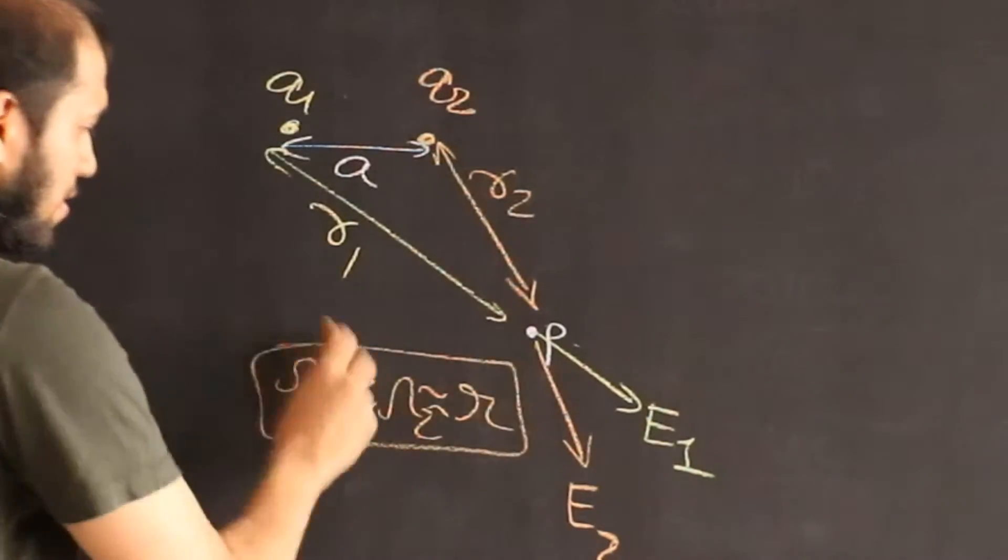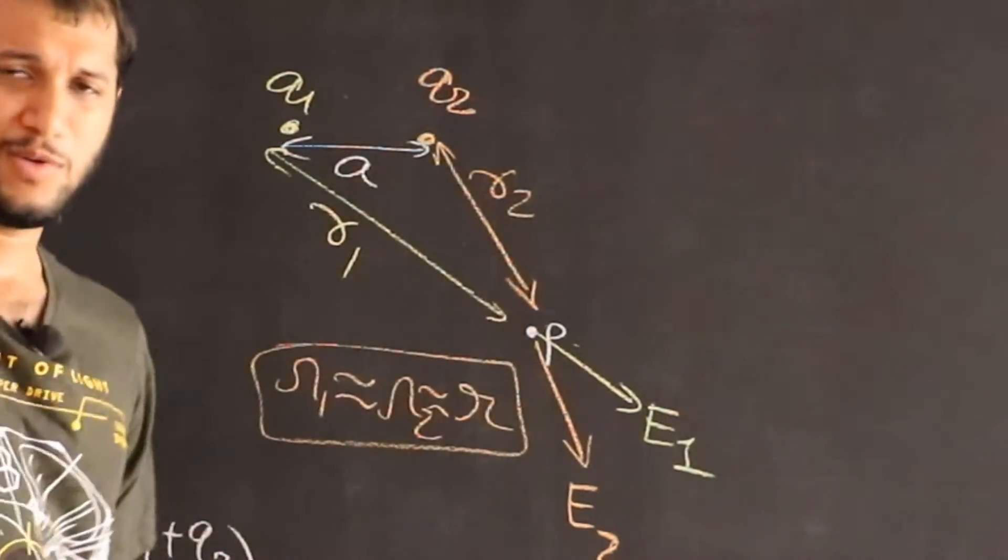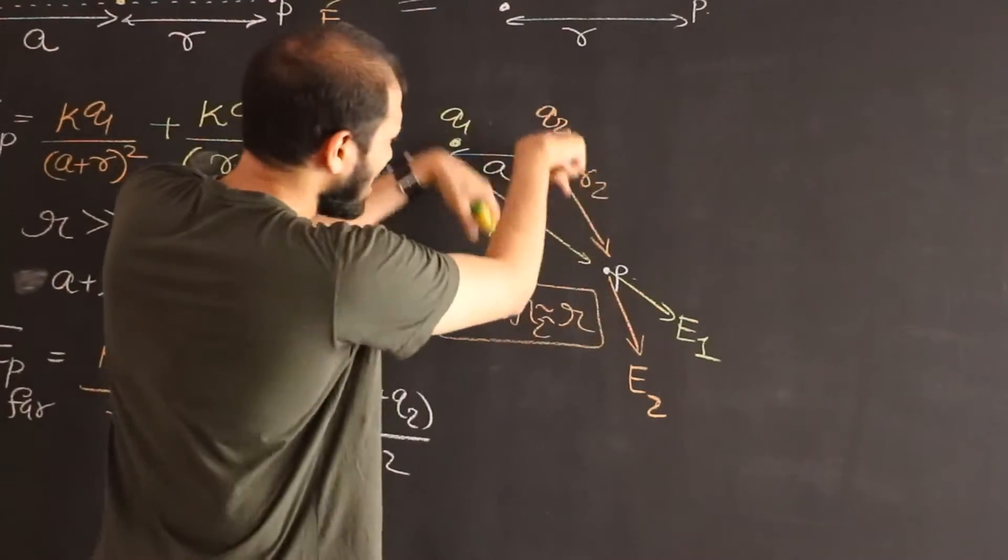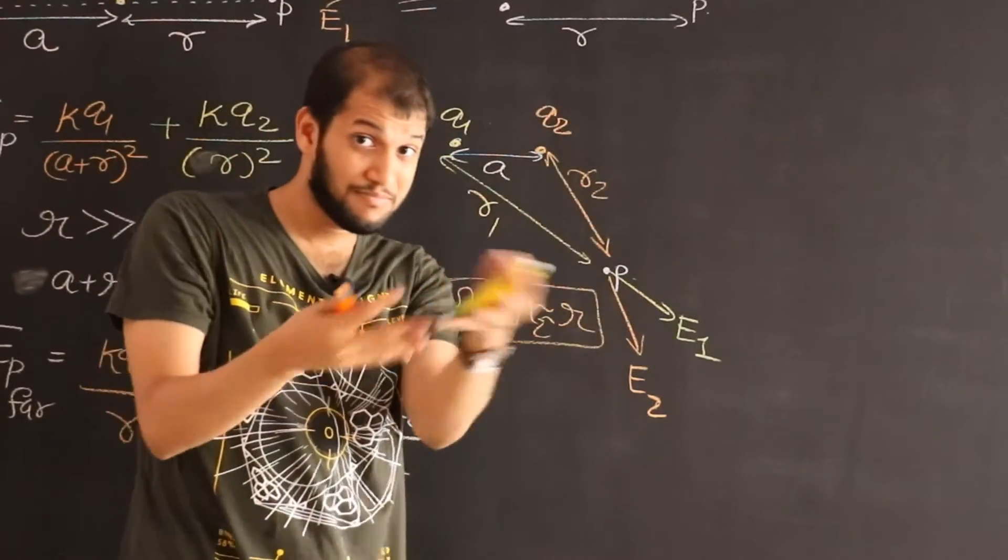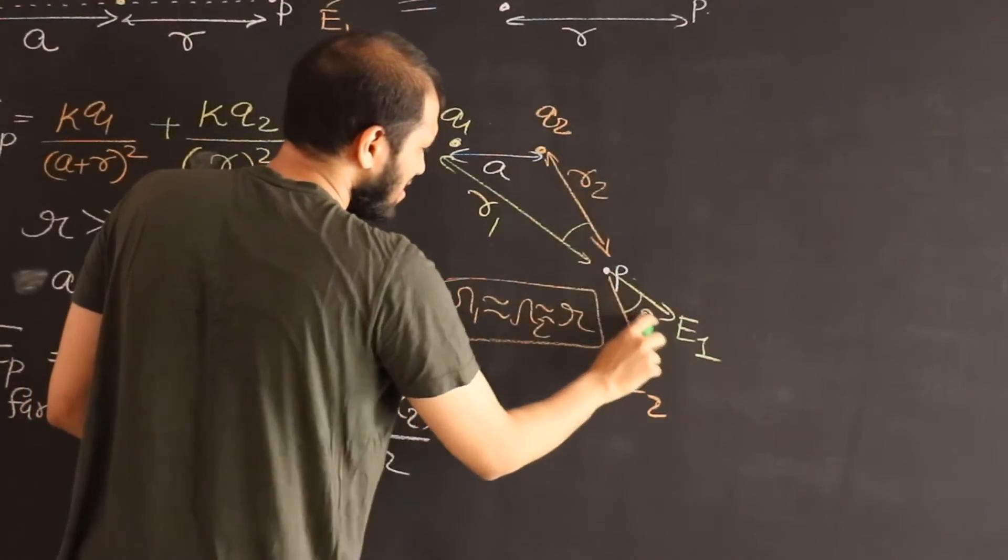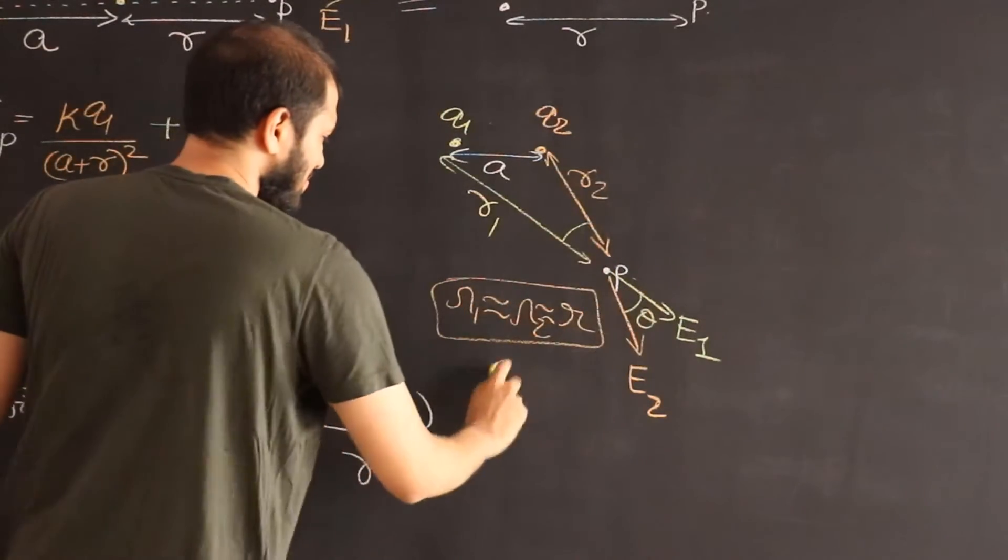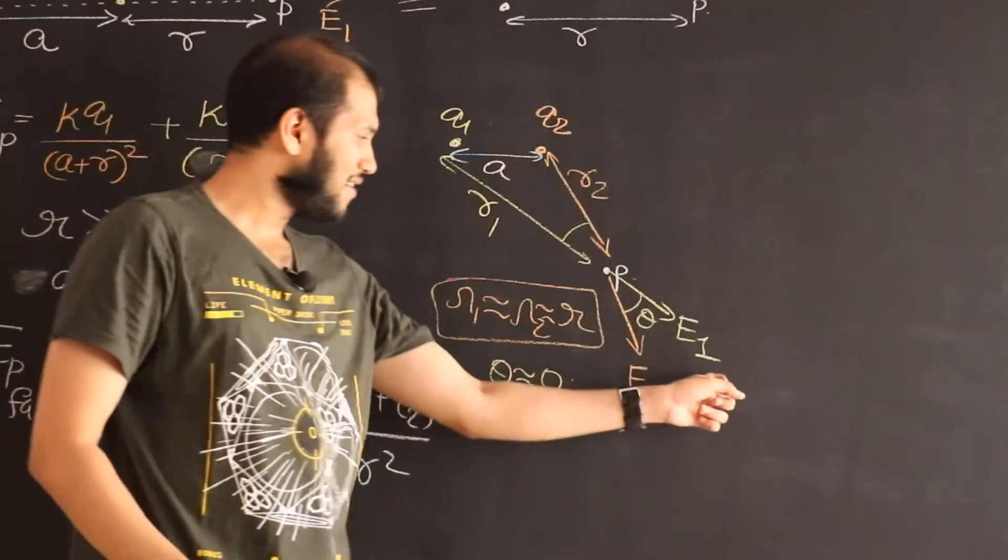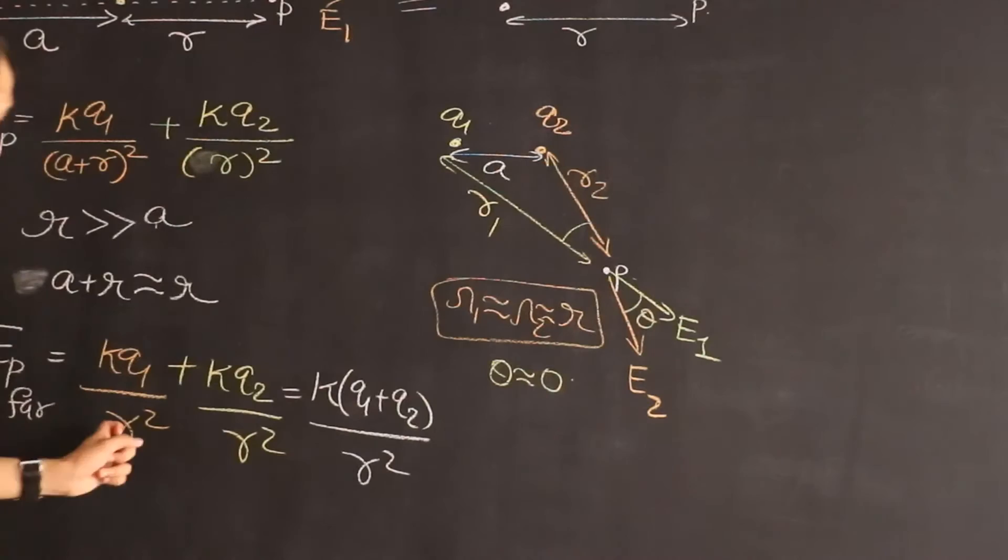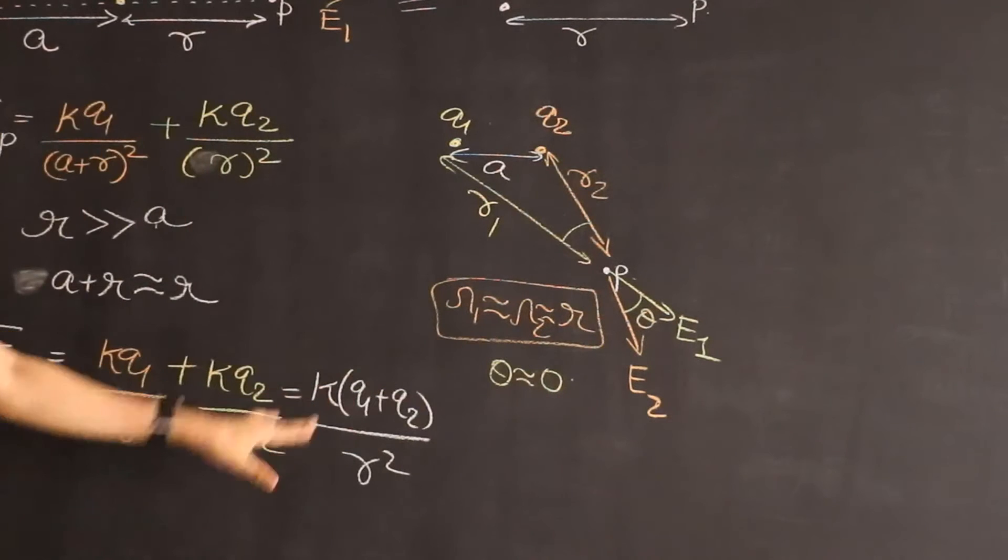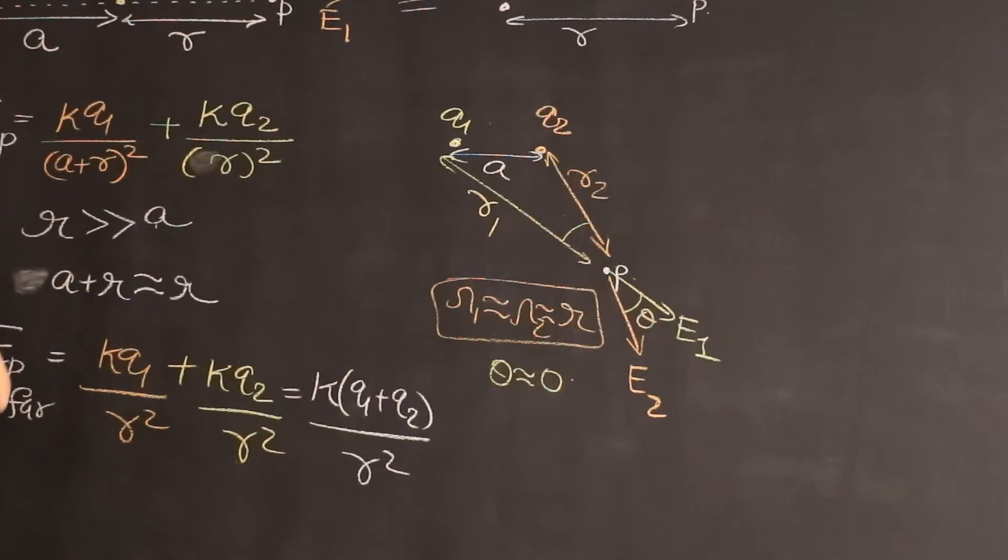If P is far away then we can approximately say R1 is almost same as R2 is almost equal to R. And both the distances are almost same to each other. And also if the point P was far away these two lines would almost be parallel to each other. In other words this angle theta would be almost zero. Notice under these two conditions E1 and E2 would get the same form: KQ1 by R² plus KQ2 by R² and therefore the total electric field will now again be K(Q1+Q2) divided by R².